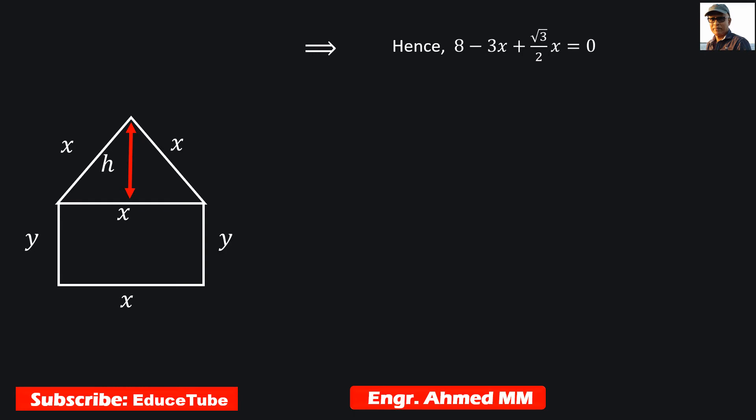So this 8 minus 3x plus square root of 3 over 2x equals 0. From here we can find x equals 16 over 6 minus square root of 3. This x we'll use later.